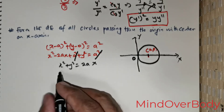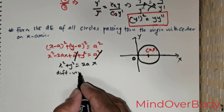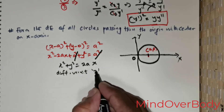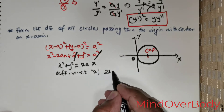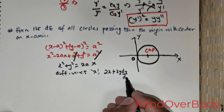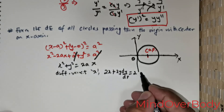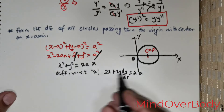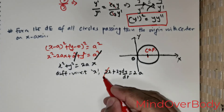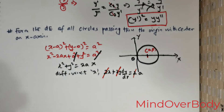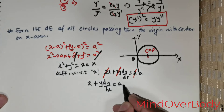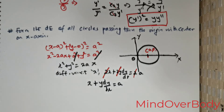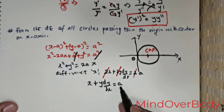Differentiating x² + y² = 2ax with respect to x: 2x + 2y·(dy/dx) = 2a. Canceling the 2s gives x + y·(dy/dx) = a. Our aim is to eliminate the arbitrary constant a.